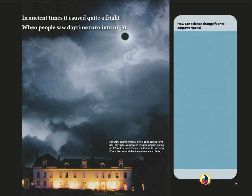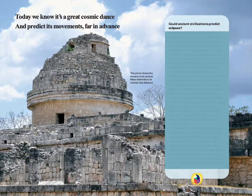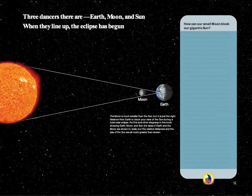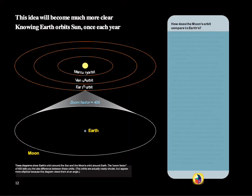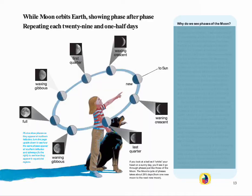In ancient times it caused quite a fright when people saw daytime turn into night. Today we know it's a great cosmic dance and predict its movements far in advance. Three dancers there are — Earth, Moon, and Sun. When they line up, the eclipse has begun. This idea will become much more clear knowing Earth orbits Sun once each year.